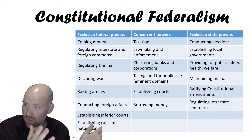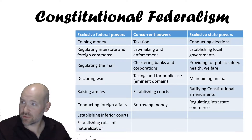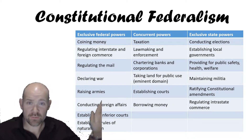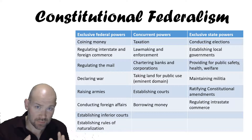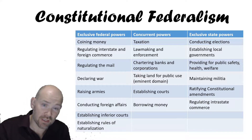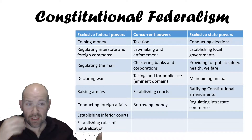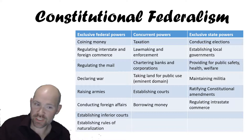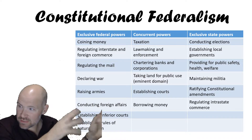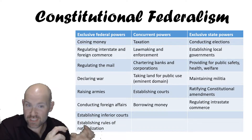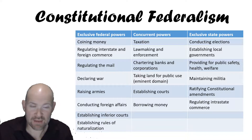In theory this should be the end of the story — enumerated powers, concurrent powers, reserved powers, done. But the truth is this relationship is not static. It has changed. It is evolving. Sometimes the federal government gets stronger and takes on more powers; sometimes it gets weaker and powers go back to the states. The debate that comes back again and again is: does the federal government have the right to do that — whatever it might be?